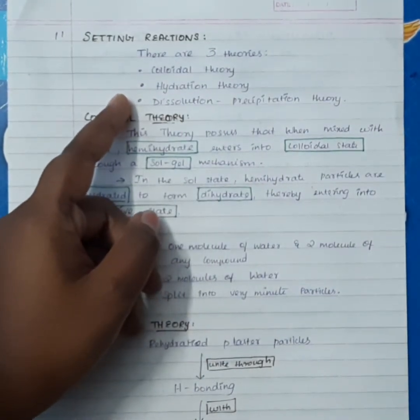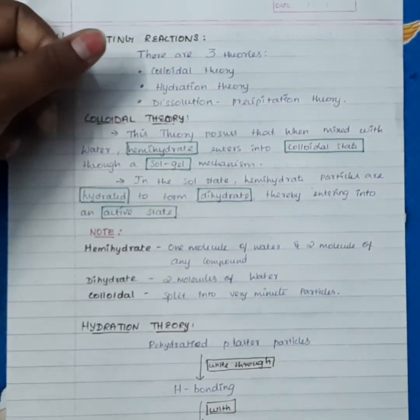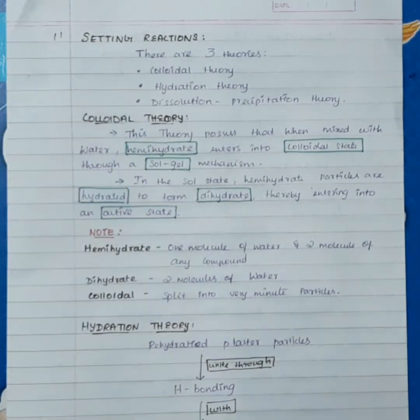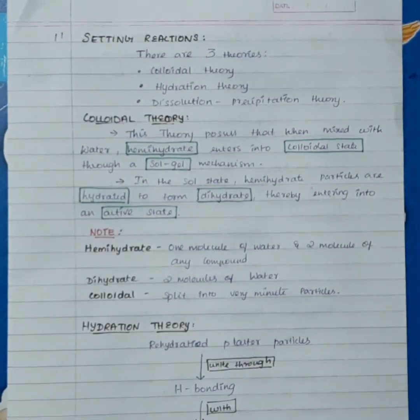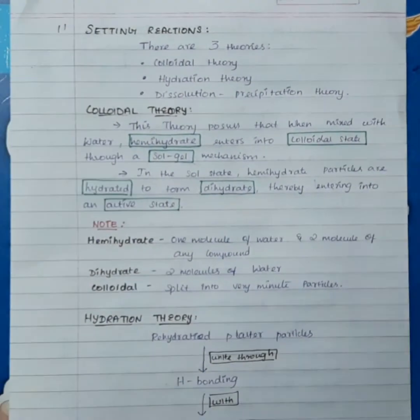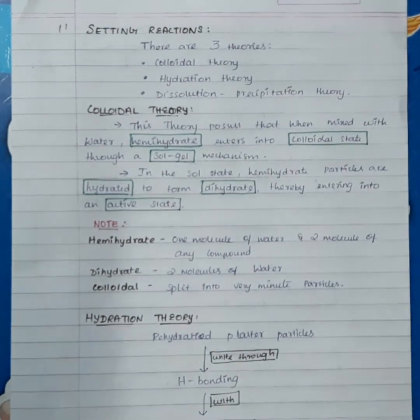There are three theories for the setting reactions of gypsum products: colloidal theory, hydration theory, and dissolution precipitation theory.